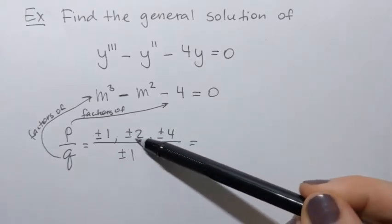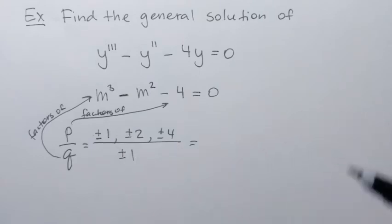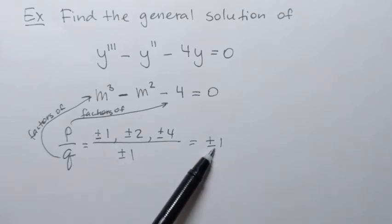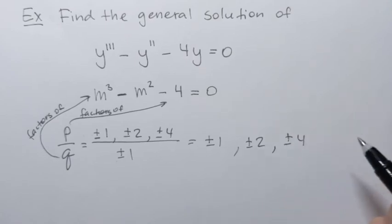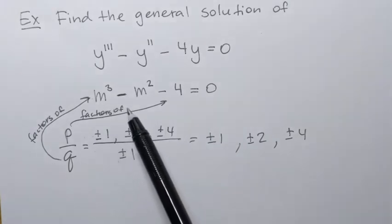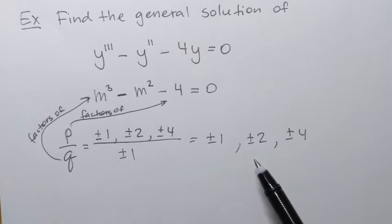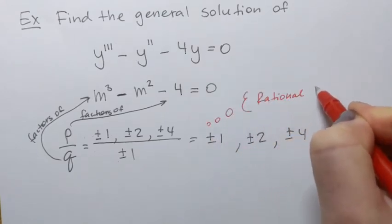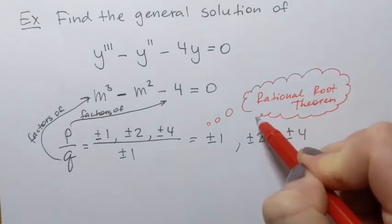We divide each option from the numerator by each option from the denominator. Dividing plus or minus 1 by plus or minus 1 gives plus or minus 1. Plus or minus 2 divided by plus or minus 1 is plus or minus 2, and then plus or minus 4. So once again, if this equation has a rational root, it should come from this list. That was the Rational Root Theorem.